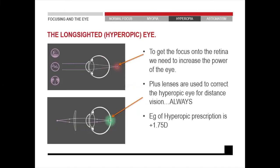With hyperopia, the focus point falls at the back of the retina. This is because the optical devices — the cornea and the lens inside the eye — are not strong enough; we are below 60 diopters. The other reason may be that the eyeball is too small. We can't change the size of the eyeball, but we can change the optics. If the eye's optics are not providing enough plus power, we can give it extra power by putting a plus lens in the spectacles in front of the eye. That is why hyperopia is always corrected with a plus lens.